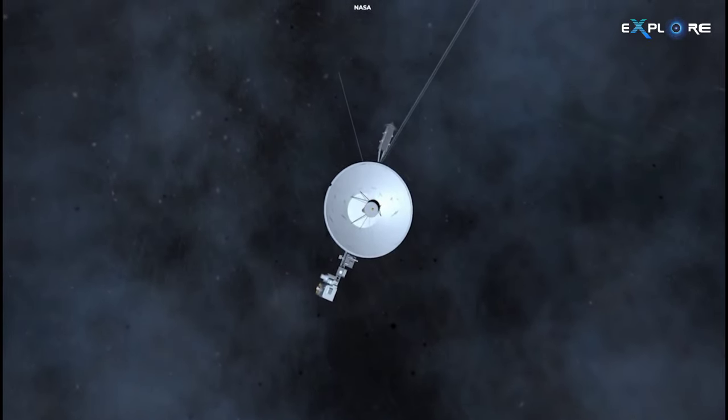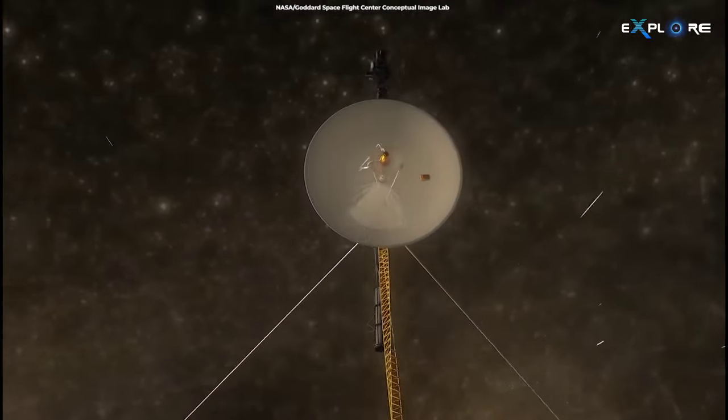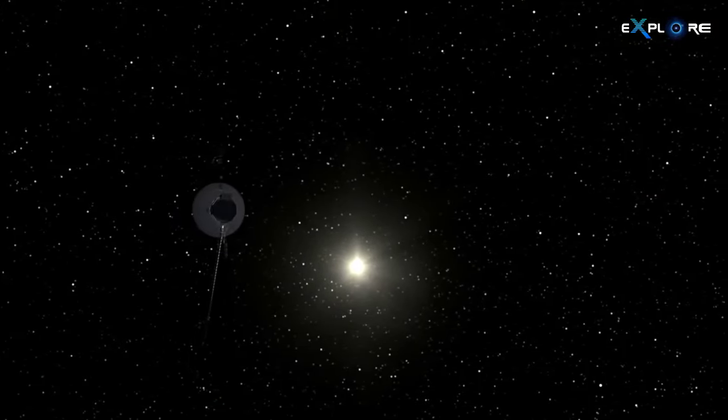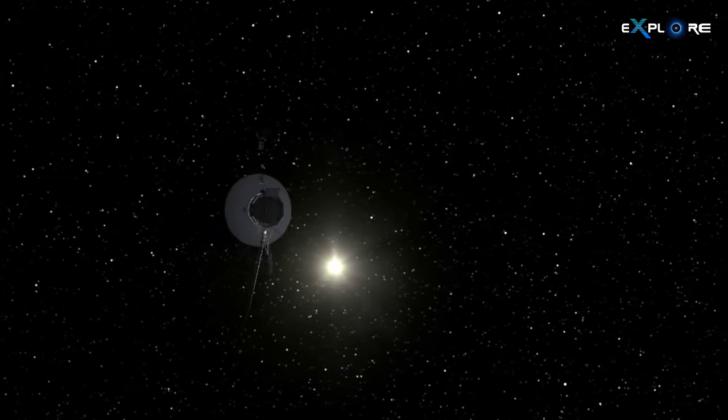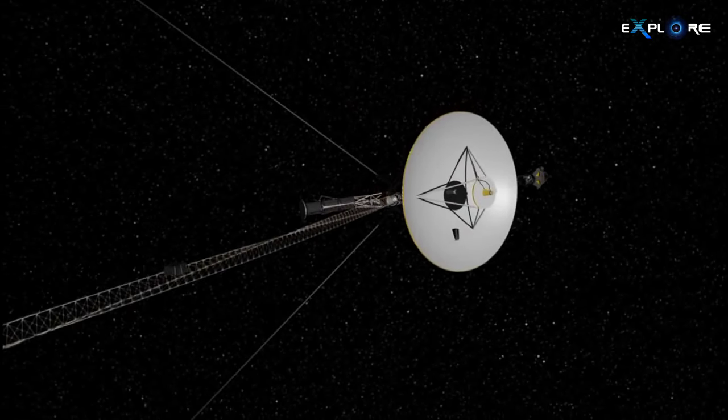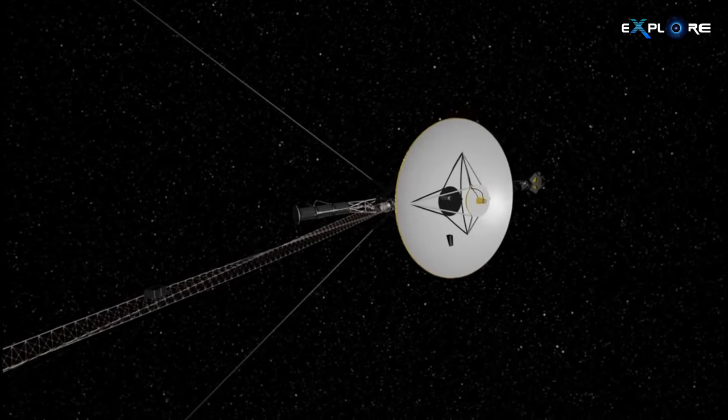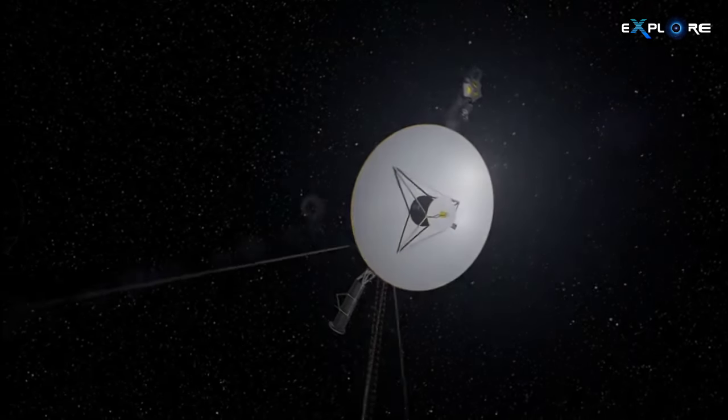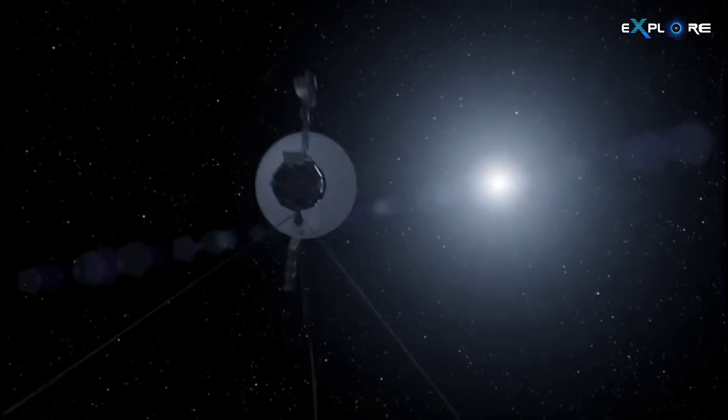In the present scenario, the glitch originates from a disruption in communication between one of the three onboard computers, known as the Flight Data System (FDS), and a subsystem called the Telemetry Modulation Unit (TMU). As a consequence, no scientific data concerning interstellar space is reaching Earth, and the engineering data reflecting the probe's health and status is also in disarray.